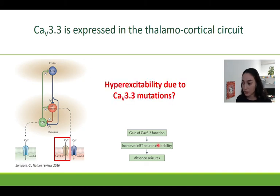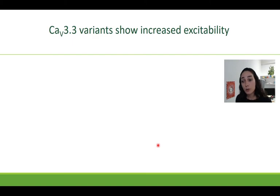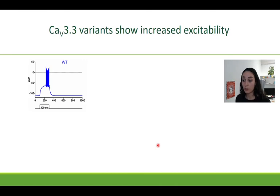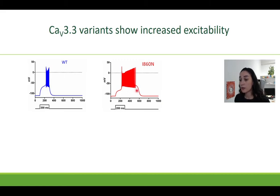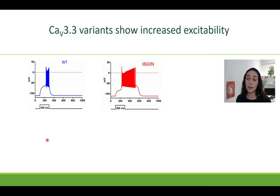So the question is, do we also see signs of hyperexcitability in our Cav3.3 mutations? To test this, we used a computer simulation of NRT neurons using the results from our own electrophysiology experiments. We found that when comparing the wild type in blue to our example mutant in red, there is an increased firing frequency, a prolonged burst duration, and also a lower firing threshold, as you can see here. This indeed indicates hyperexcitability.